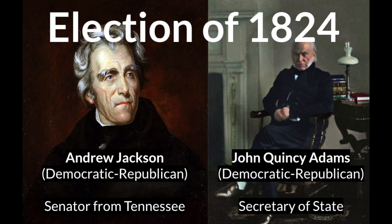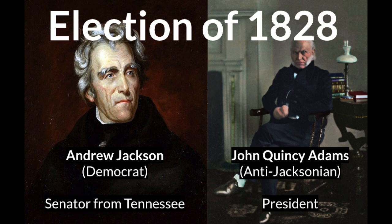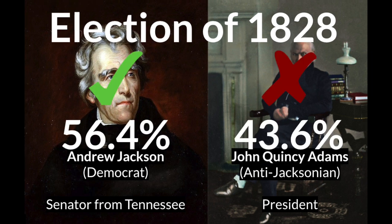Adams, the secretary of state and son of the second U.S. president, had won the election despite losing the popular vote. But the party, and the country, had become incredibly divided. Jackson was furious, seeing the election as stolen from him. In 1828, the Tennessee senator decided to challenge Adams once again. By this point, the Democratic-Republicans had divided in two: supporters of Adams formed the National Republican, or Anti-Jacksonian party, and supporters of Jackson formed the Democratic party. This time, the controversial Jackson won. In 1832, he was up for re-election, and the Anti-Jacksonians nominated Secretary of State Henry Clay.